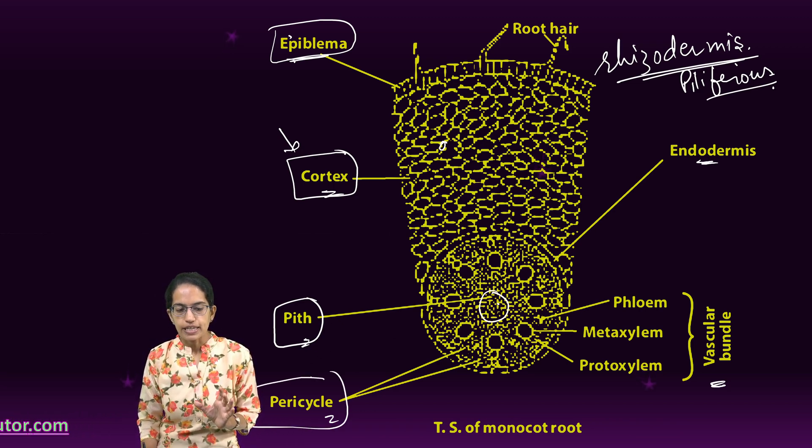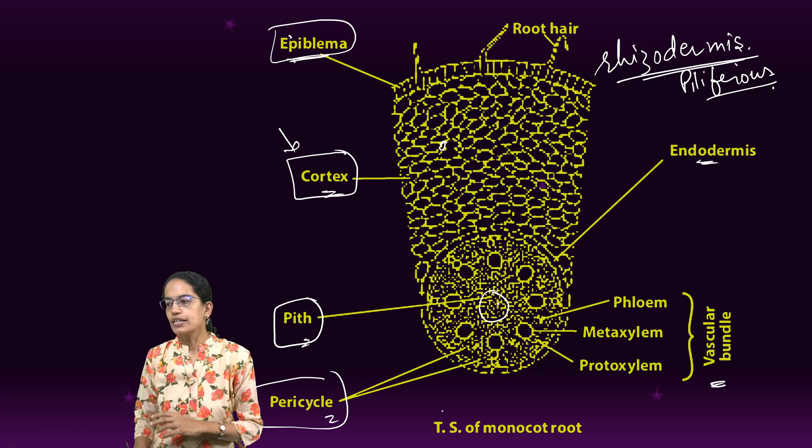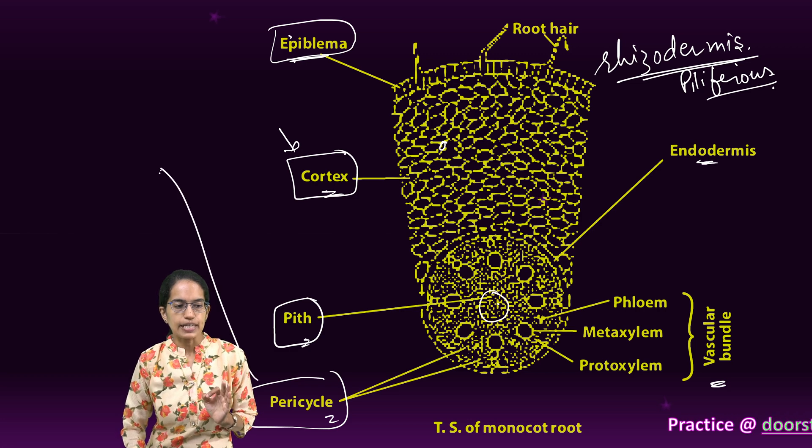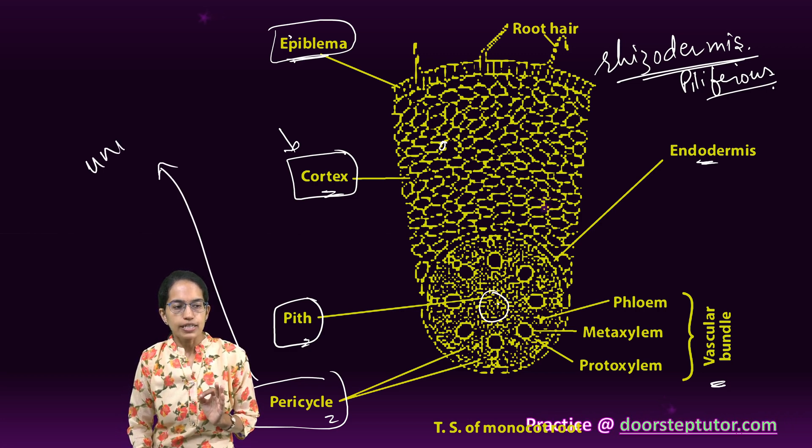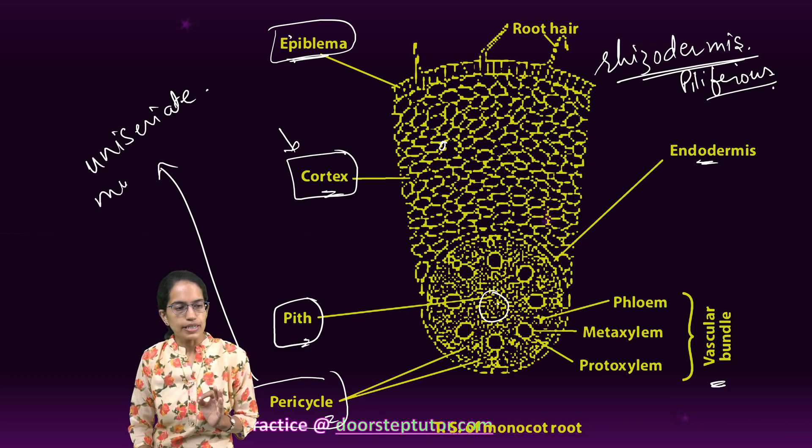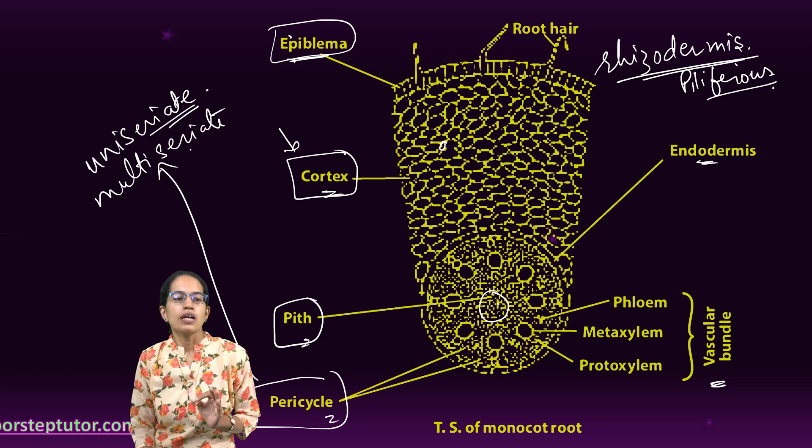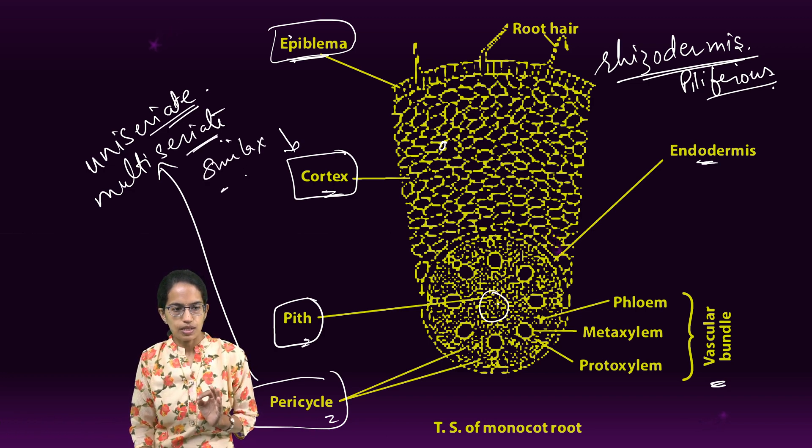The next is pericycle. Pericycle is the layer which surrounds the vascular bundle and has thin parenchyma cells. This pericycle can be of two types: uniseriate or multiseriate. Example of uniseriate is maize plant, example of multiseriate is smilax.